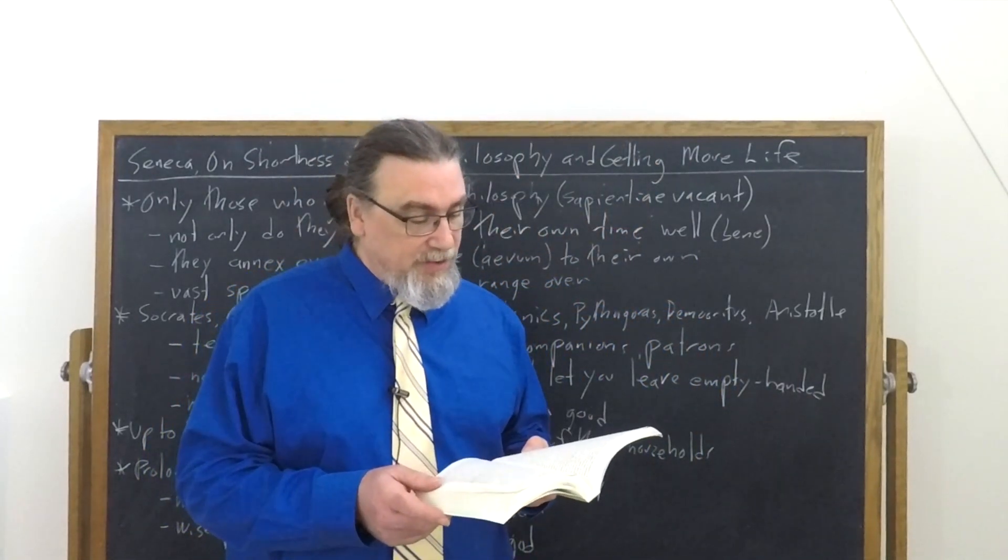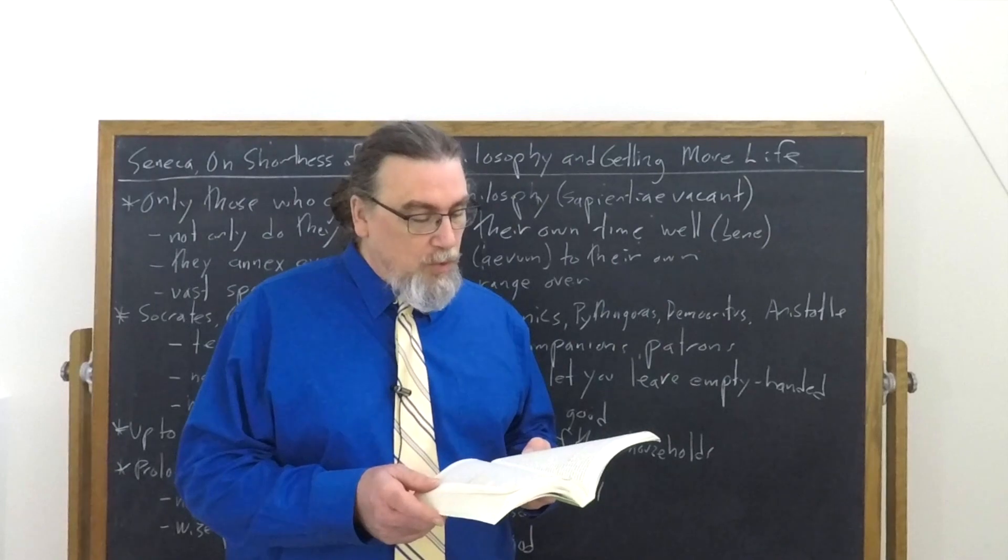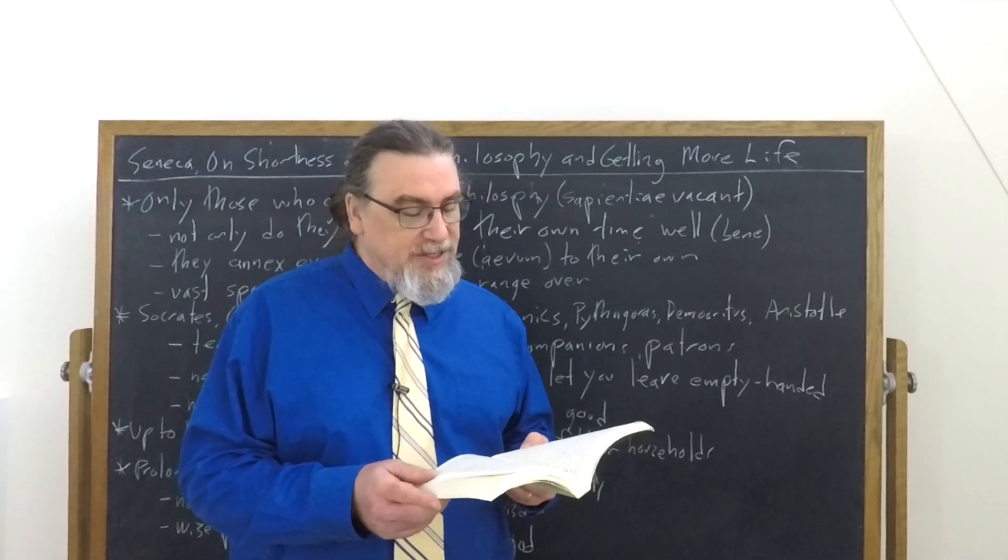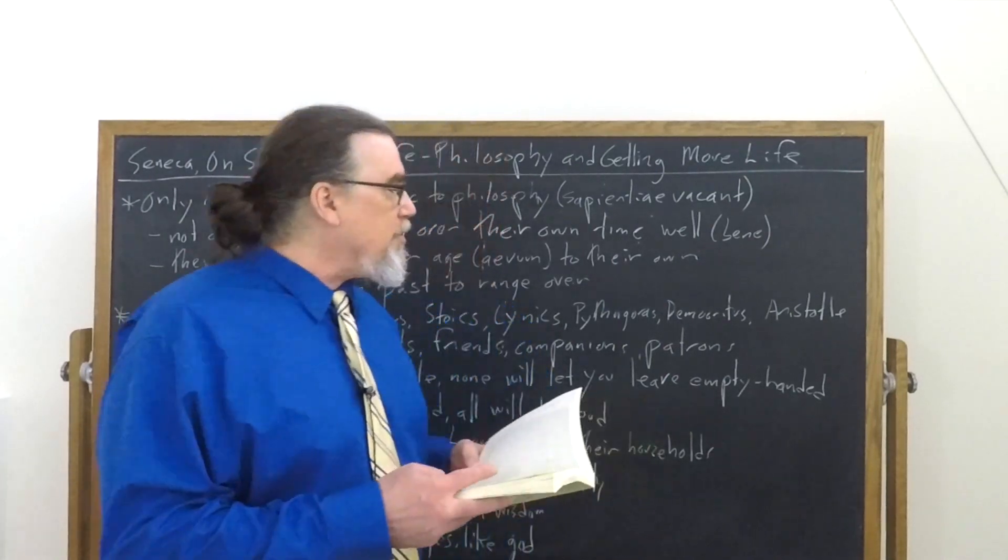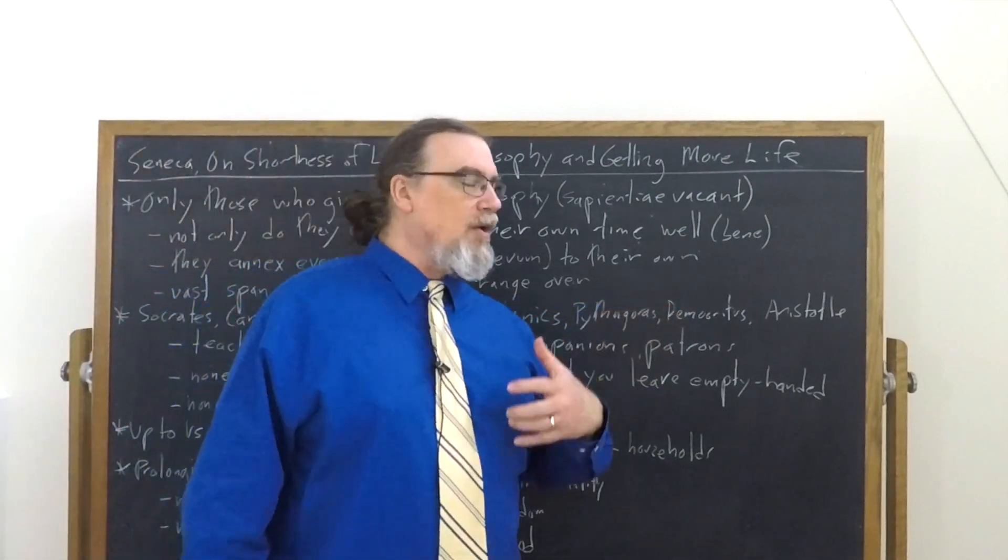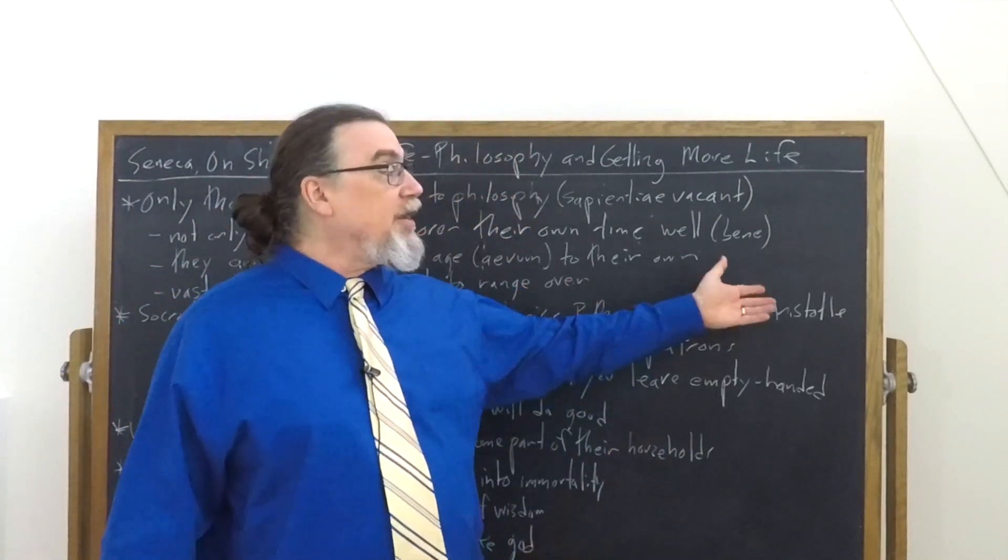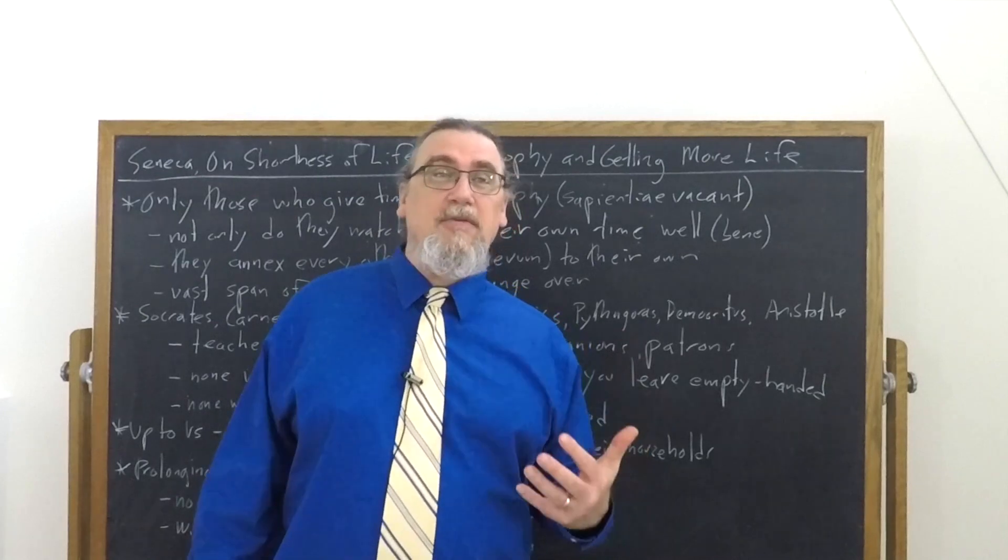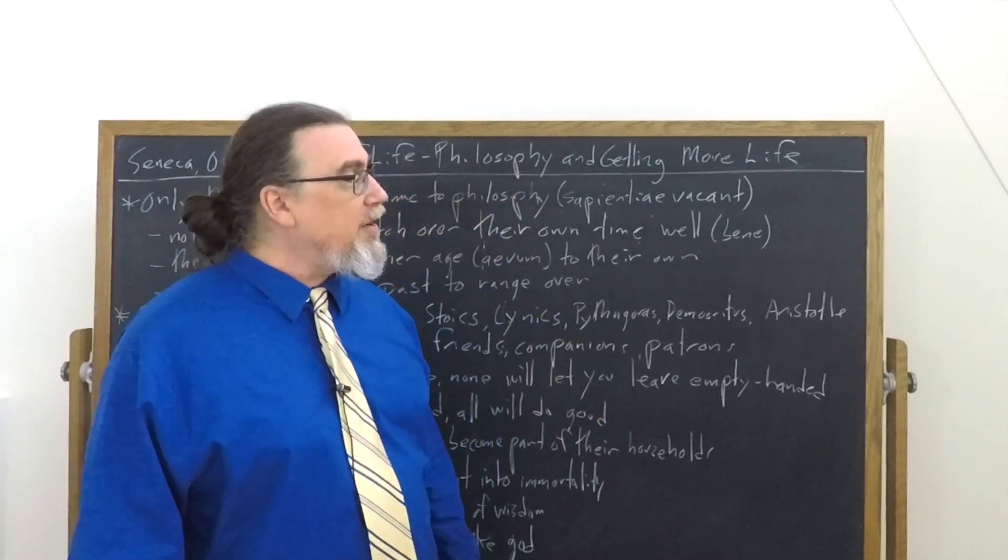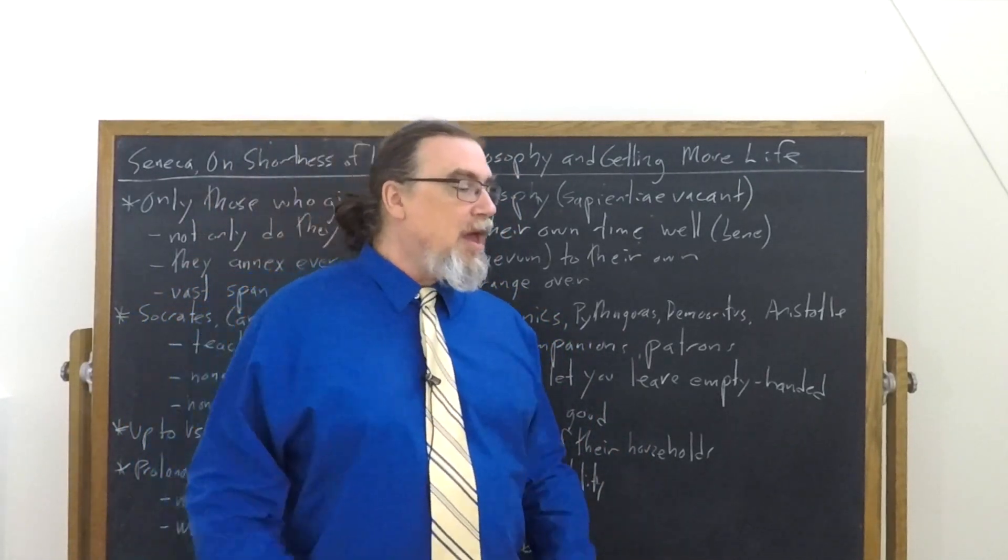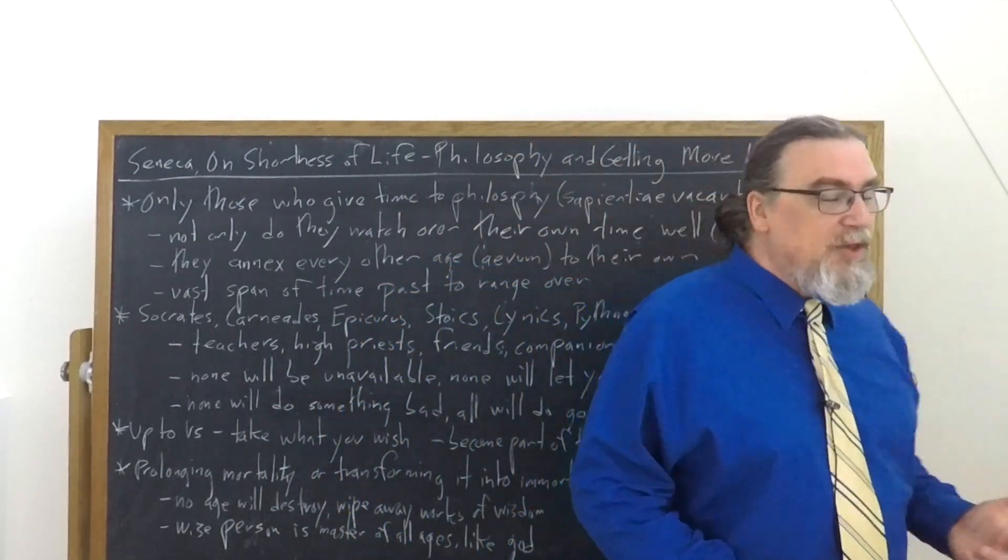He also mentions Pythagoras. He mentions Zeno, of course, the founder of Stoicism. A little bit later, he says we can talk about Zeno, Pythagoras, Democritus. So Pythagoras and Democritus are pre-Socratic philosophers. He talks about Aristotle and Theophrastus, Aristotle's close friend and successor. And what do we get from these people?